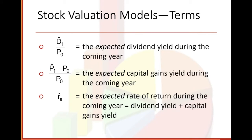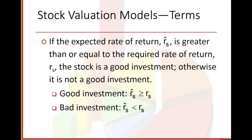Stock valuation model terms continued. D-sub-T divided by P-sub-zero equals the expected dividend yield during the coming year. P-sub-one minus P-sub-zero divided by P-sub-zero — that's like beginning minus ending divided by beginning — is the expected capital gains yield during the coming year. R-hat-sub-S is the expected rate of return during the coming year: dividend yield plus capital gains yield. If the expected rate of return R-hat-sub-S is greater than or equal to the required rate of return R-sub-S, the stock is a good investment; otherwise it is not.